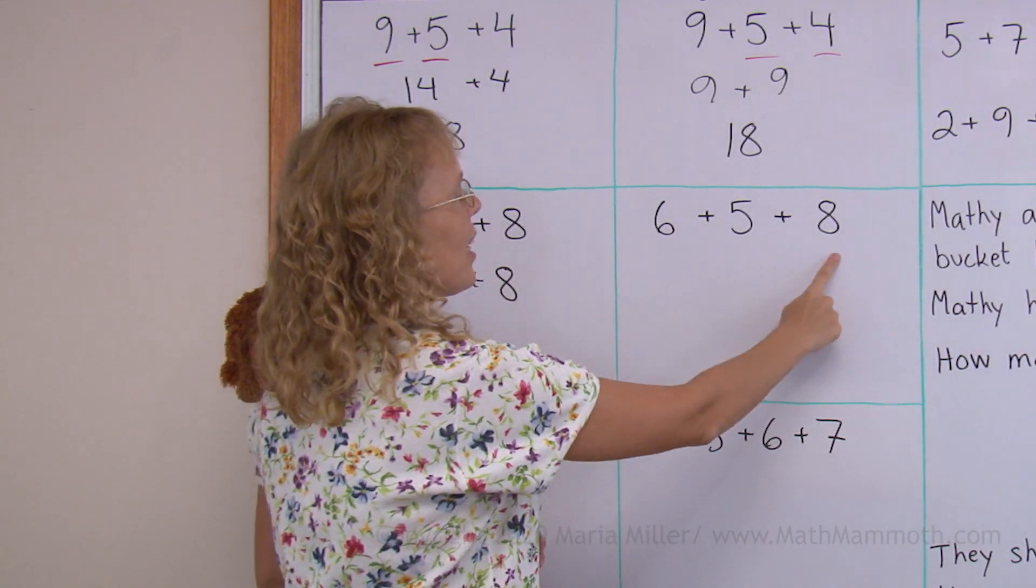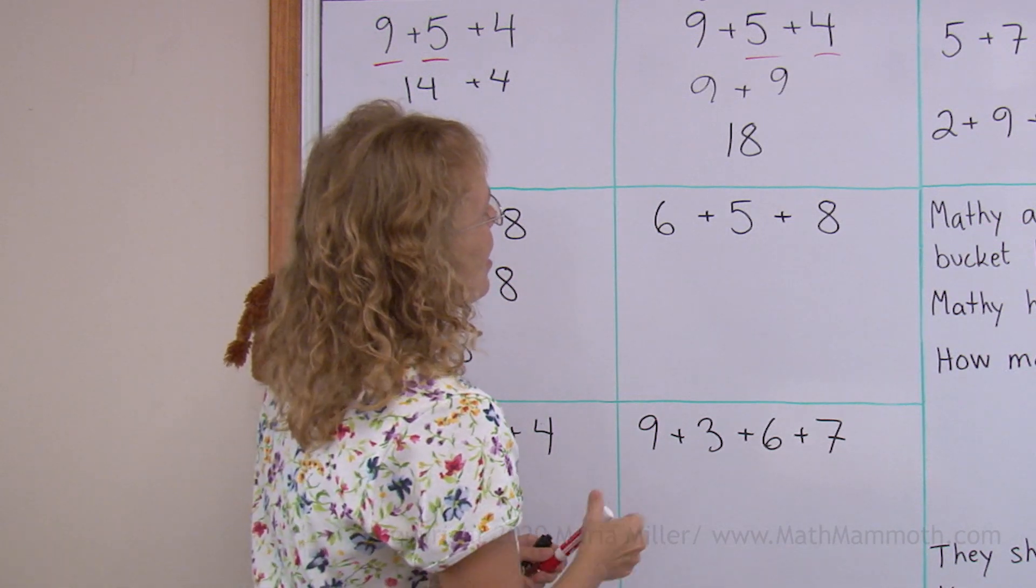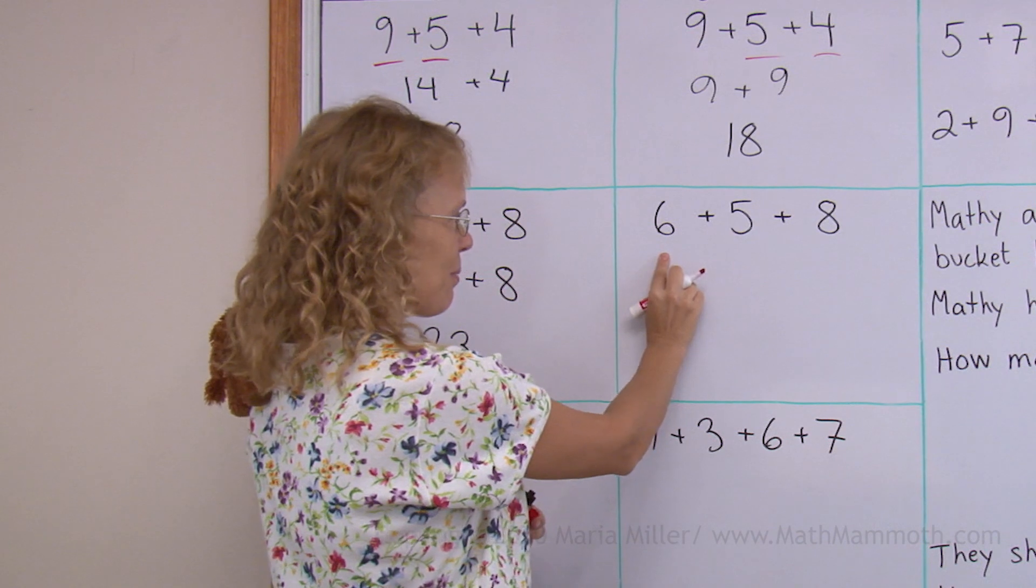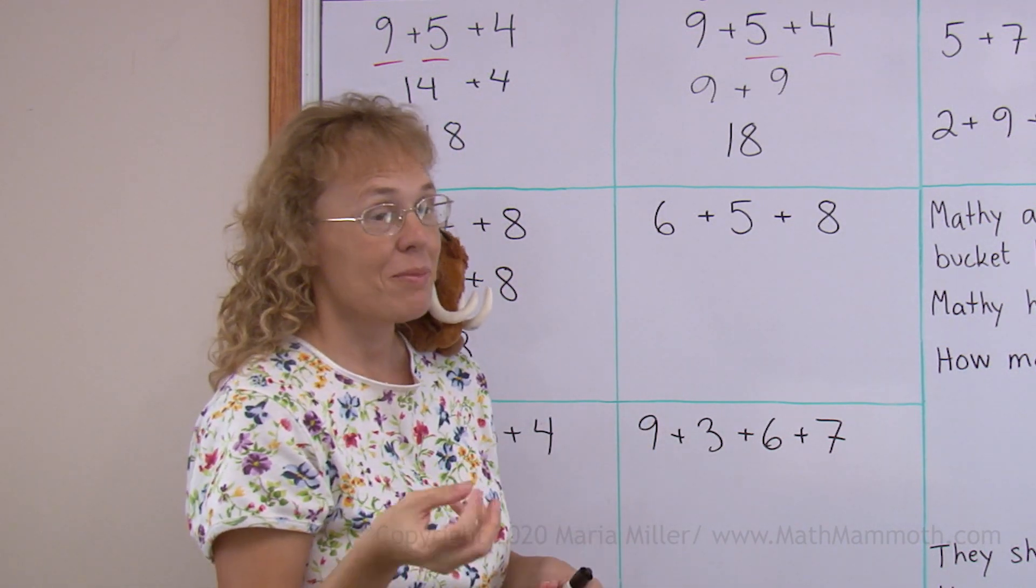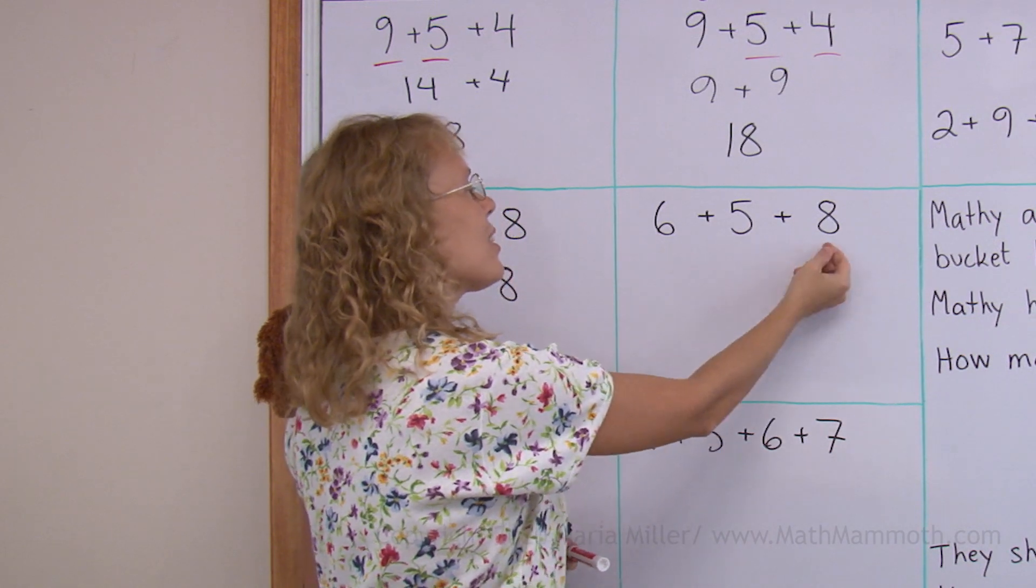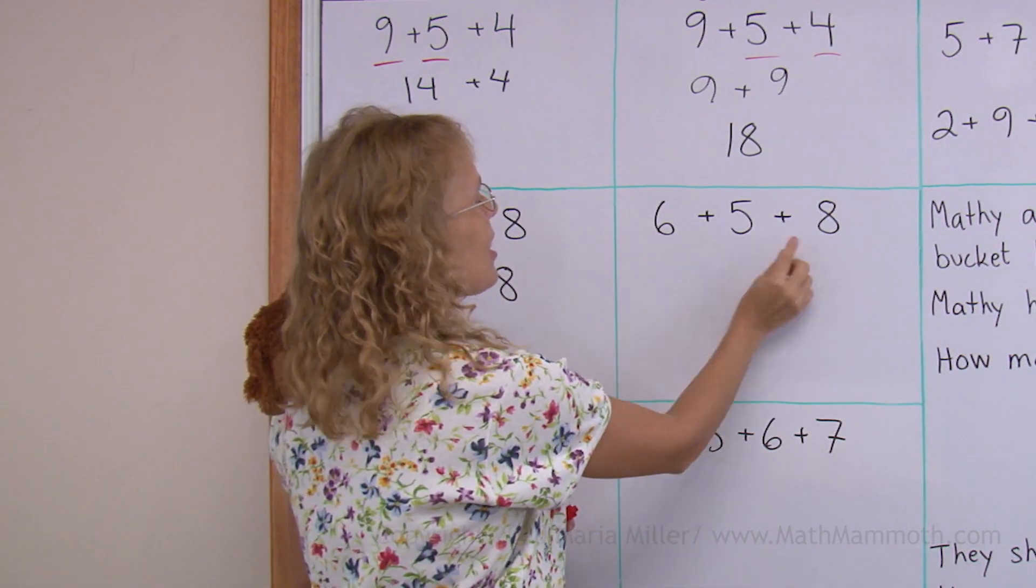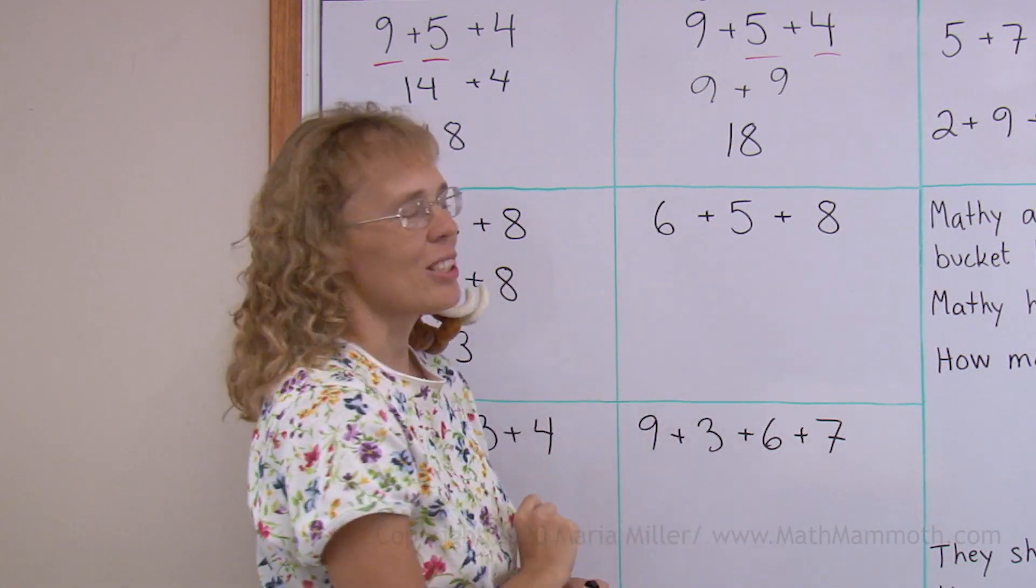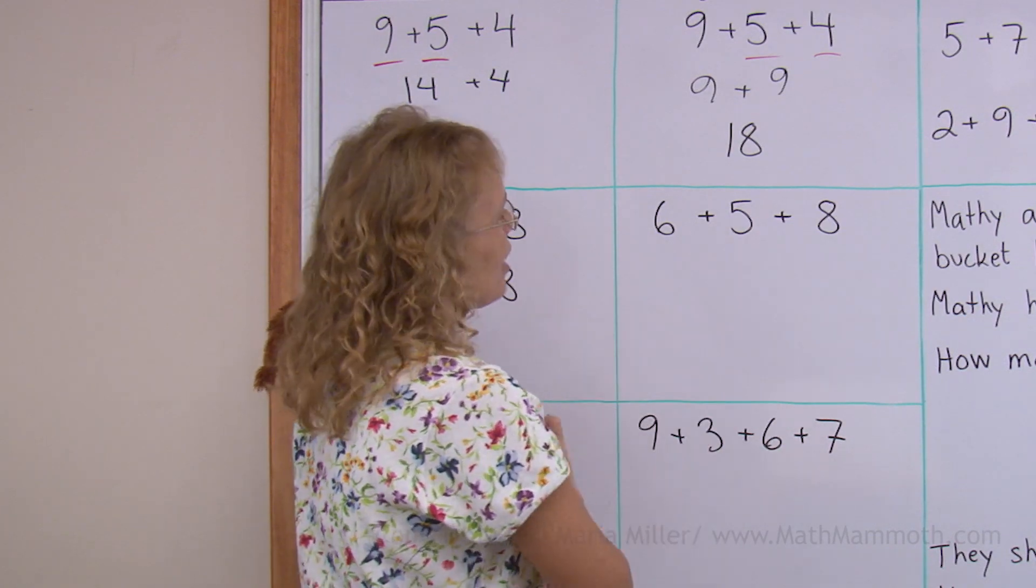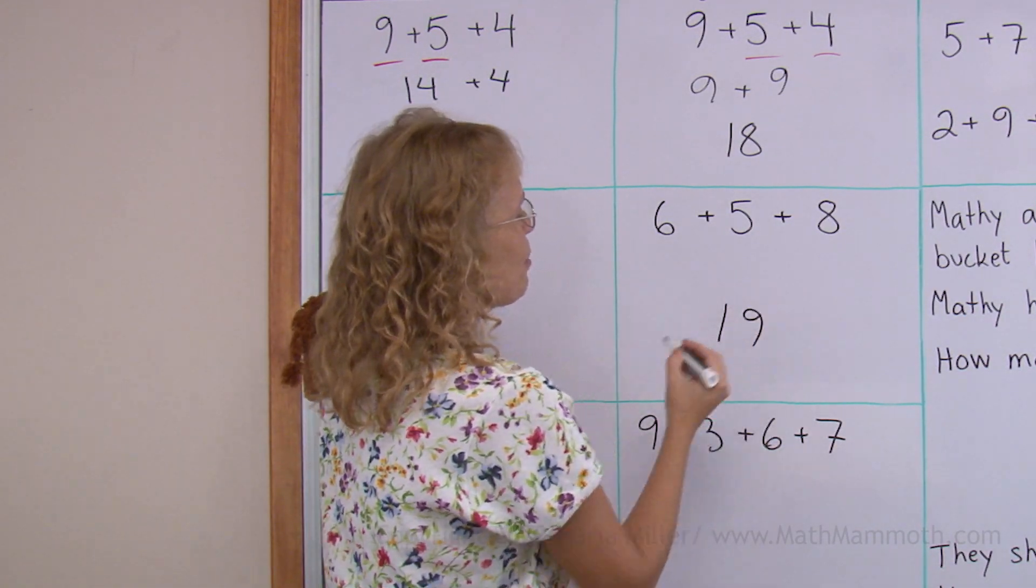6 plus 5 plus 8. Again, you can choose in which order to add. If you add these first, then you would have 13 and 6. That's 19, right? If you add these first, you get 11 plus 8. And that's, of course, 19 too. Or if you add 6 and 8 first, you have 14 and then 5, 14 plus 5. If you remember 6 plus 8 better than you remember 5 plus 8, maybe you want to do that. Just you choose. We get 19.